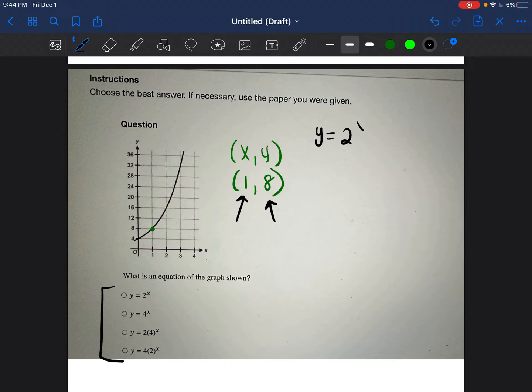y is equal to 2^x. We're going to go ahead and replace the x with 1 and we're going to see if we get 8. So 2 to the power of 1 just means 2 one time. So that is equal to 2. That is not equal to 8. So this cannot be the equation of the line.